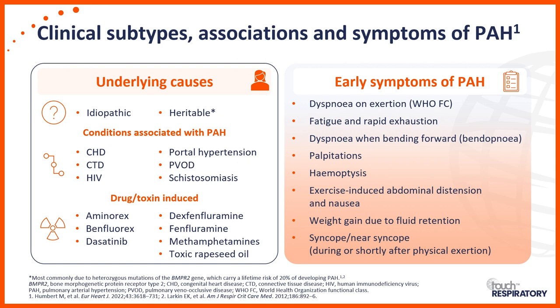Regarding drug and toxin causes, in the past the most common were weight loss drugs or anorexogens. Nowadays, especially in the Western world and the US, the most common causes are cocaine and methamphetamine use. There was an epidemic on the Iberian Peninsula related to toxic rapeseed oil, but that's no longer an issue. Interestingly, all the weight loss drugs associated with pulmonary hypertension had methamphetamine rings in them.